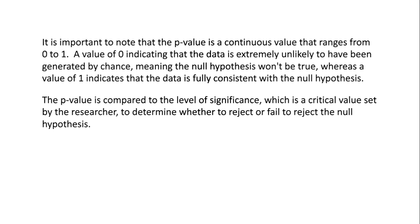It is important to note that the p-value is a continuous value that ranges from 0 to 1. A value of 0 indicates that the data is extremely unlikely to have been generated by chance, meaning the null hypothesis won't be true, whereas a value of 1 indicates that the data is fully consistent with the null hypothesis.